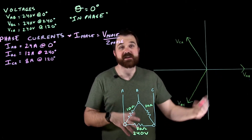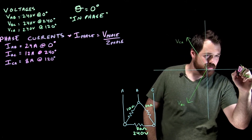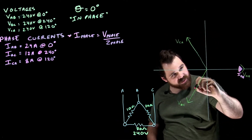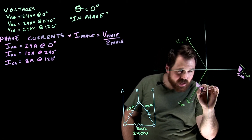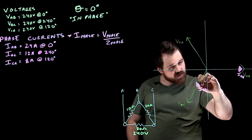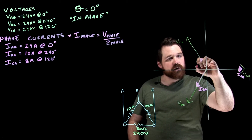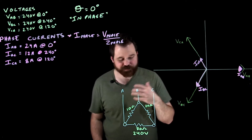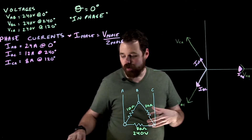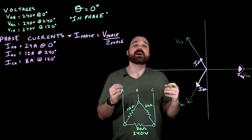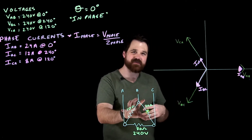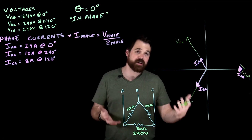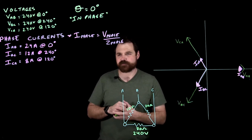Now I'm plotting these onto the phasor diagram: I_AB is the longest, I_BC is about half the length, and I_CA is even shorter. Those are plotted to approximate scale. Now for the last part — solving the line currents. This is an unbalanced circuit, so the default balanced delta rules cannot apply: I_line does not equal root-3 times I_phase, and there is no 30-degree lag.